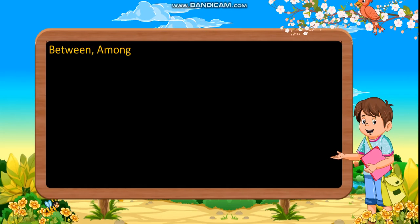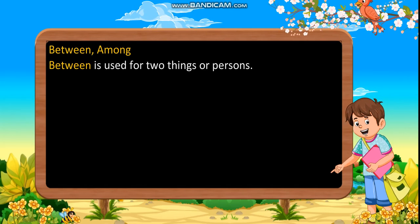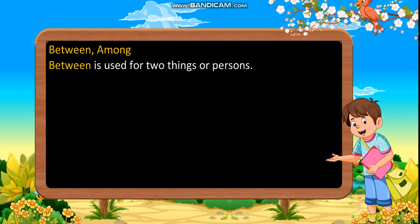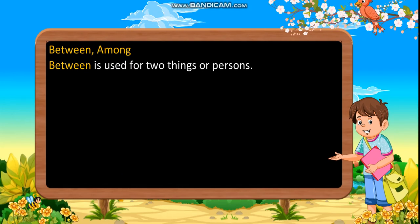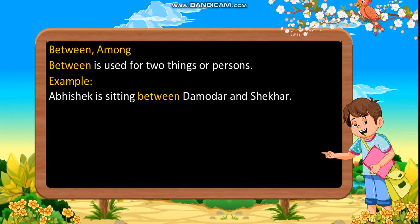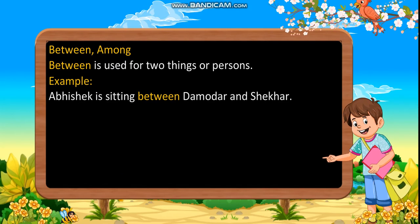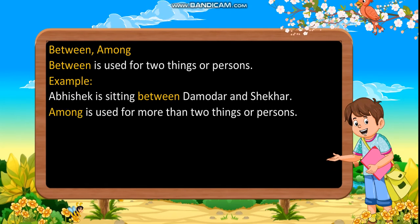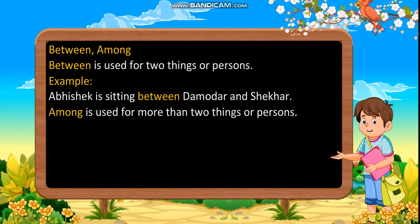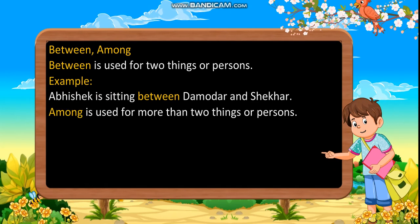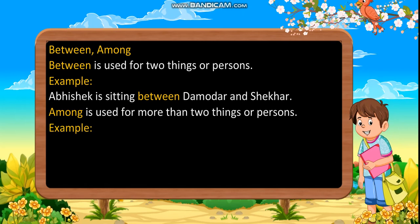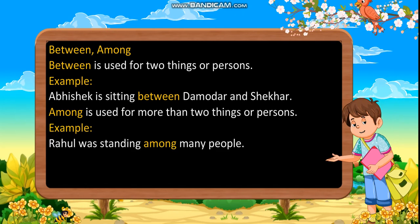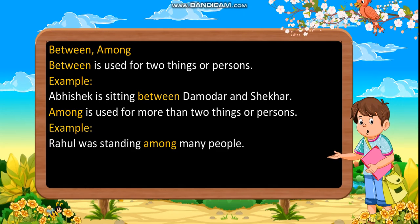Between, among. Between is used for two things or persons. Example: Abhishek is sitting between Damodar and Shekhar. Among is used for more than two things or persons. Example: Rahul was standing among many people.